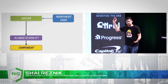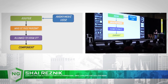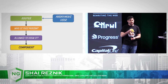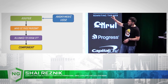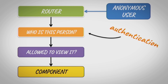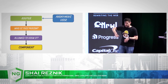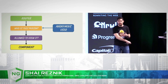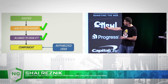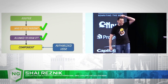We want to check if this anonymous user is allowed to view the component, but in order to do that we need to know who this person is — we need to know their identity and their user ID. This is the flow: the first part is authentication, the second is authorization. Once our user goes through them, from anonymous user they become an identified user.